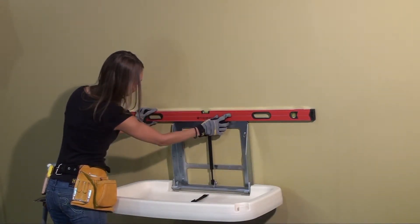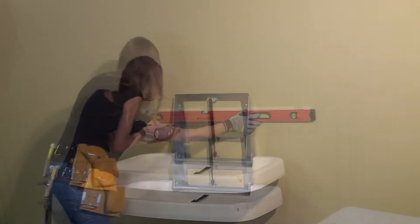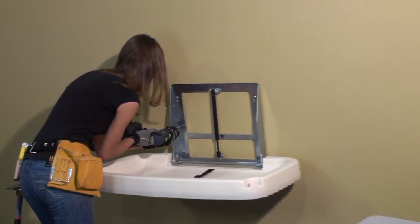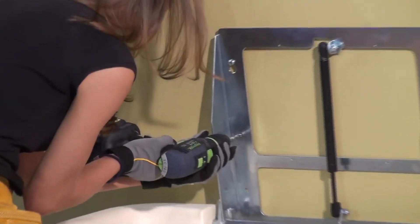A level is used to ensure the unit is mounted straight. Next, the four remaining pilot holes are drilled using the holes in the chassis as a template. Lastly, four screws and four washers complete the installation of the frame.